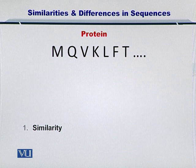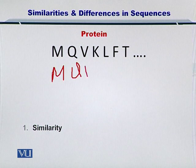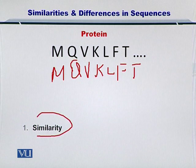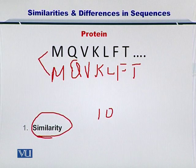So if you have another protein sequence — M, Q, V, A, L, F, and T — then you can obviously say that in terms of similarity, these two sequences are 100% similar.